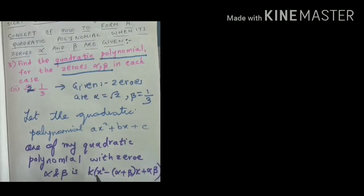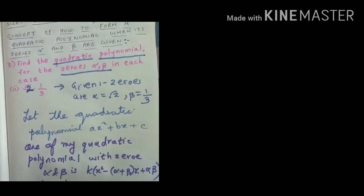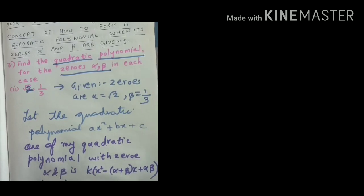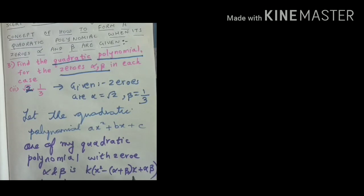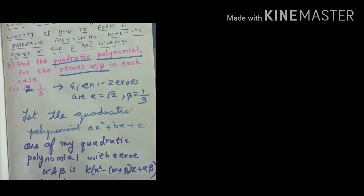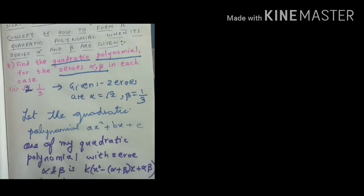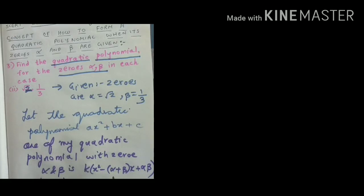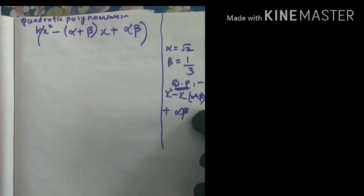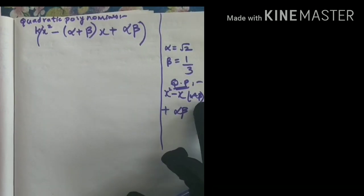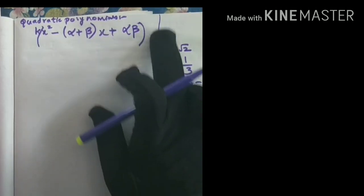Here k is any real number — it can be 1, 2, 3, 4, or anything. I'm assuming this value of k because if there are fractions in the expression — in x you have a fraction and in alpha beta you have a fraction — then taking k as any real number will allow both fractions to get cancelled and we'll get one clean quadratic equation. The general form is x squared minus (alpha plus beta) times x plus alpha beta, multiplied by k.